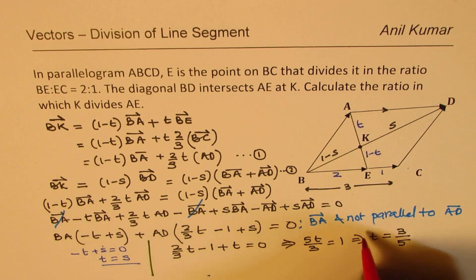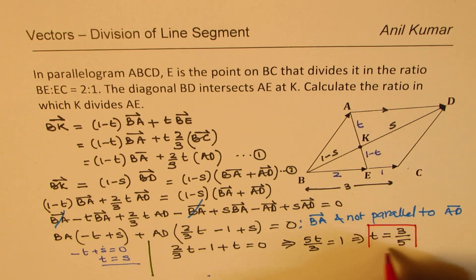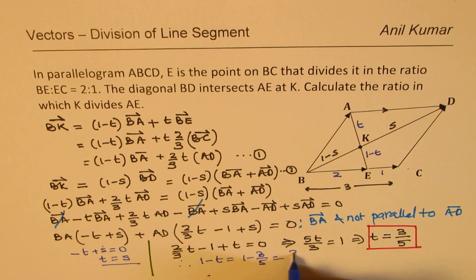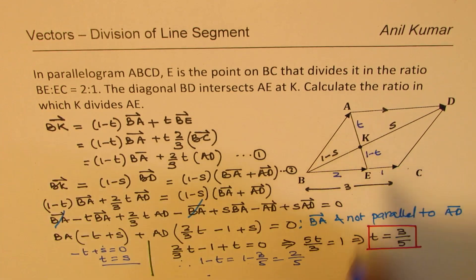So we get this ratio T as 3/5. So what is 1 minus T? 2/5, correct? So T is 3/5, and therefore, 1 minus T will be 1 minus 3/5, which is 2/5.